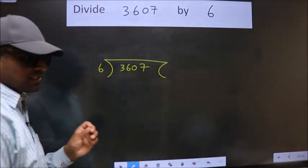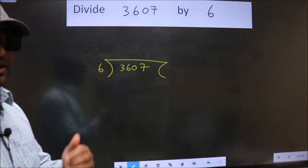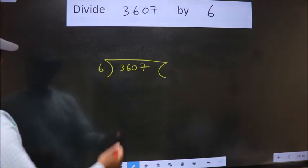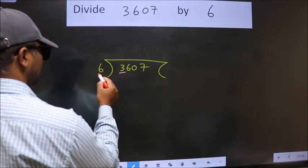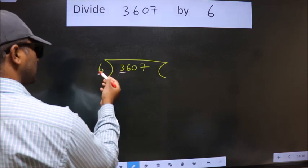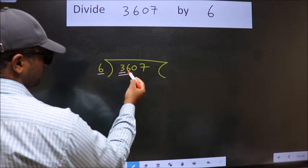This is your step 1. Next. Here we have 3. Here 6. 3 is smaller than 6. So we should take 2 numbers, 36.